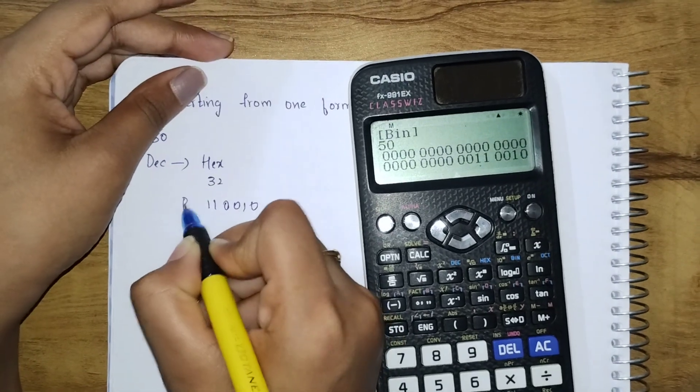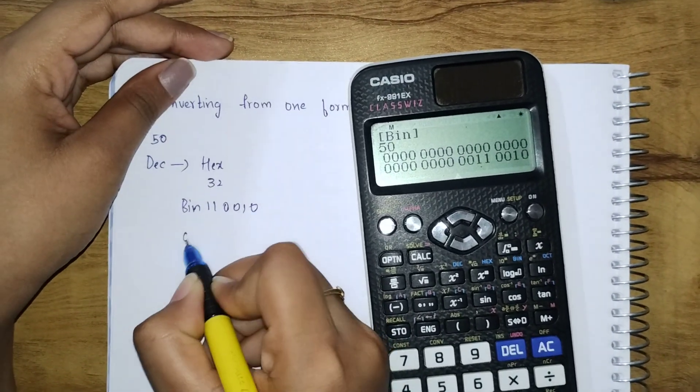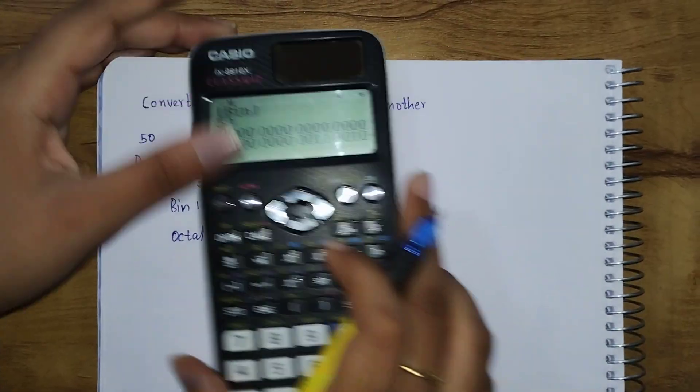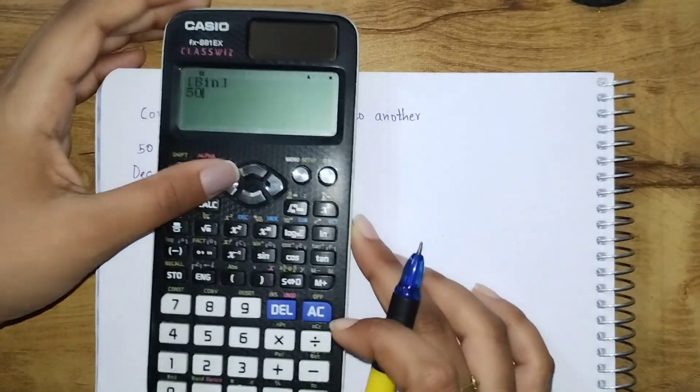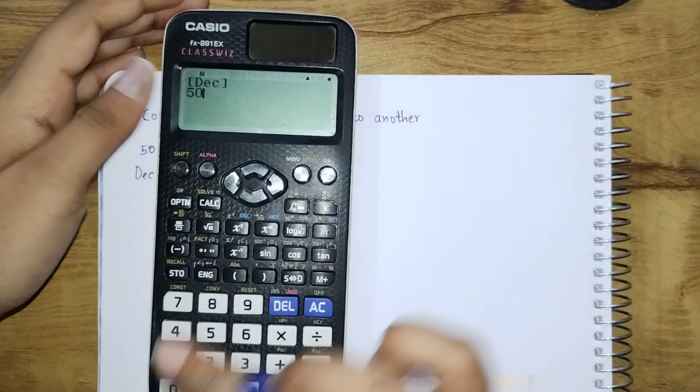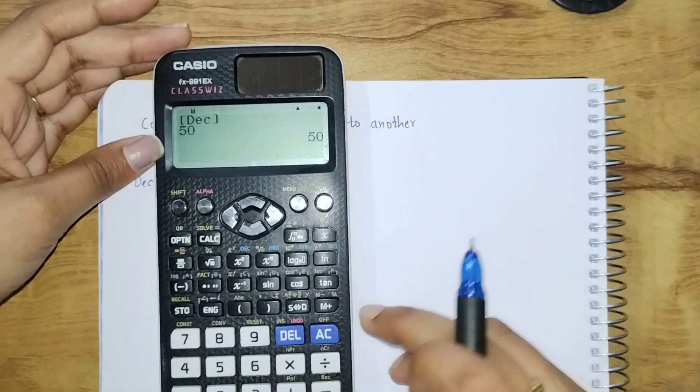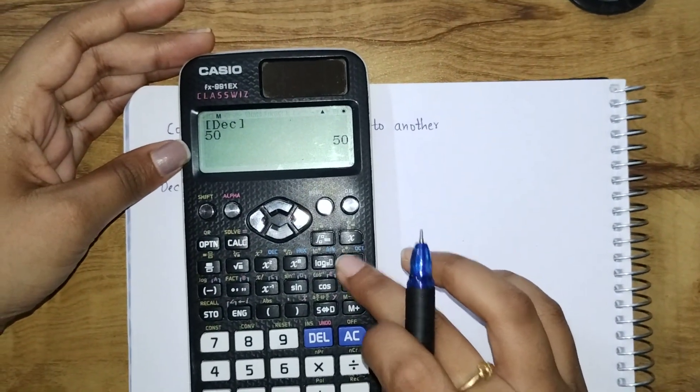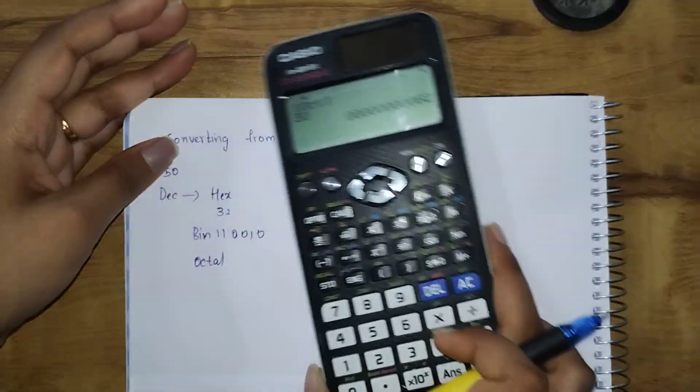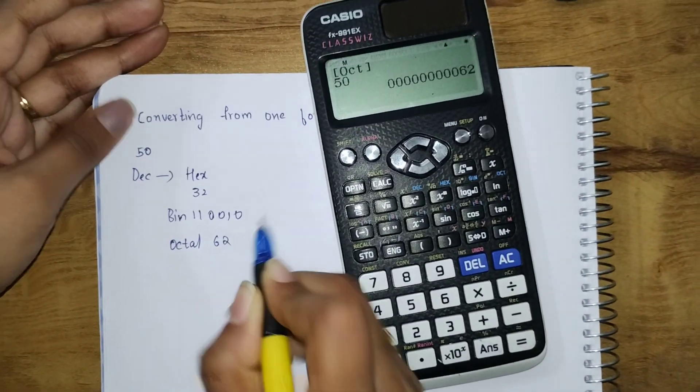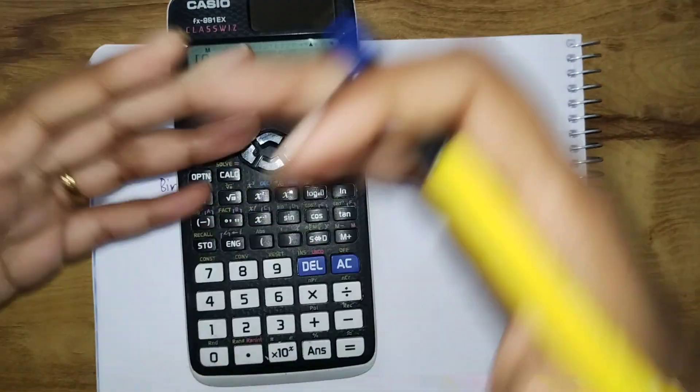Next is octal. We want octal. Again click here, click on decimal, click on equals to. Then to octal, click on octal. There you got 62. That's how you convert decimal numbers to hexadecimal, binary, and octal.